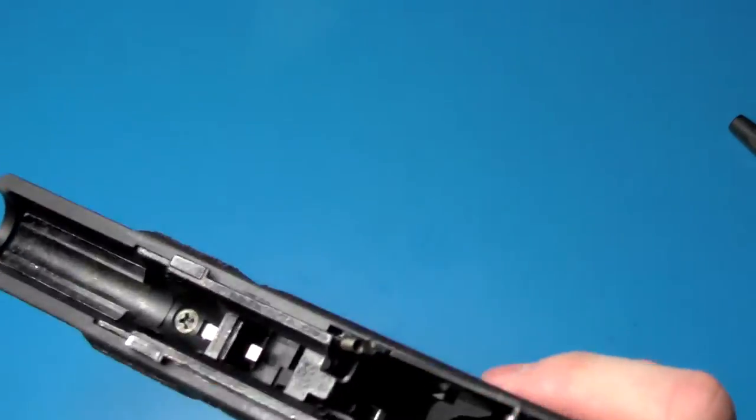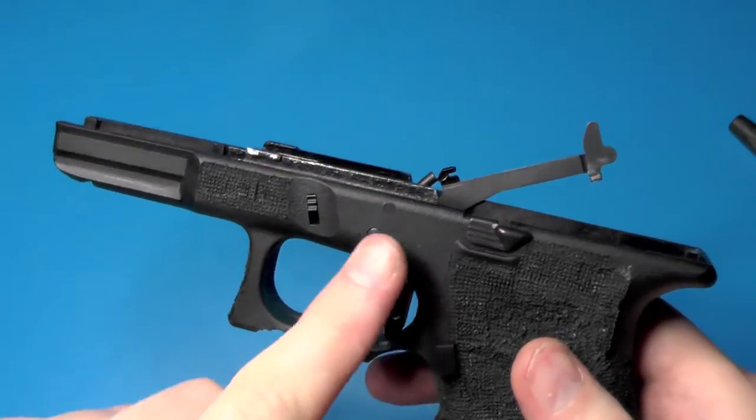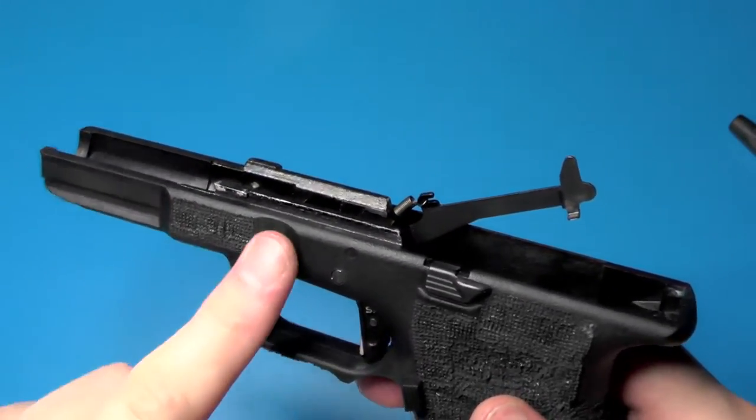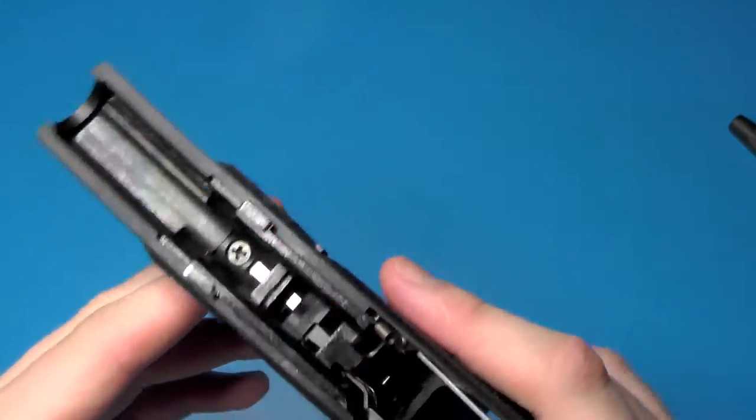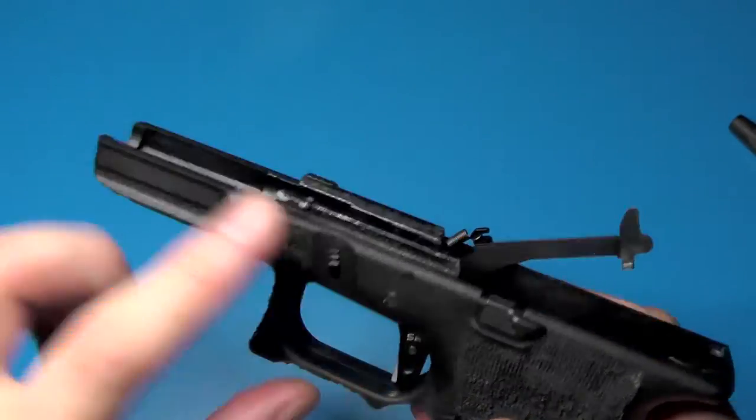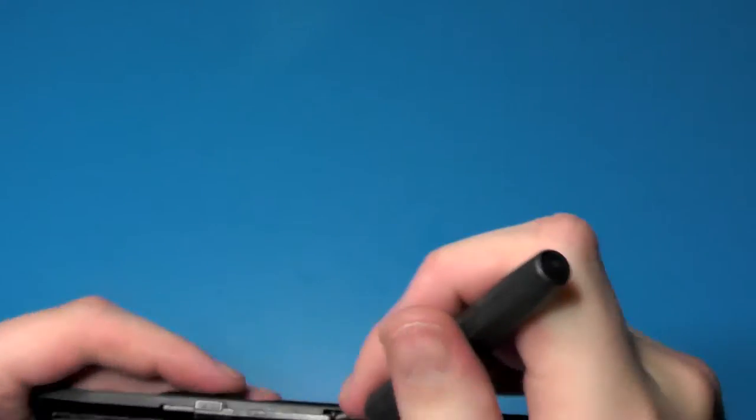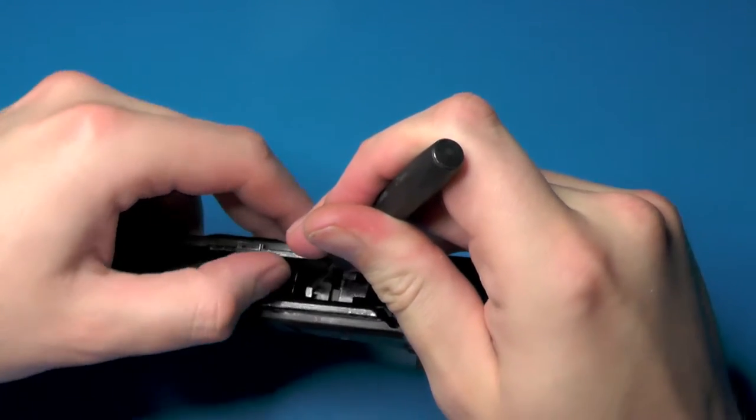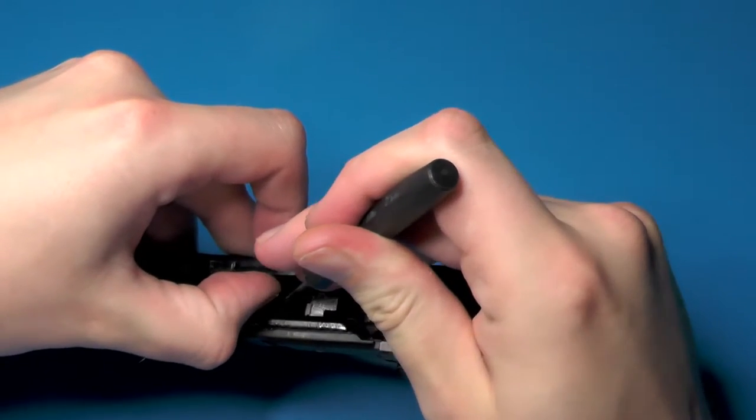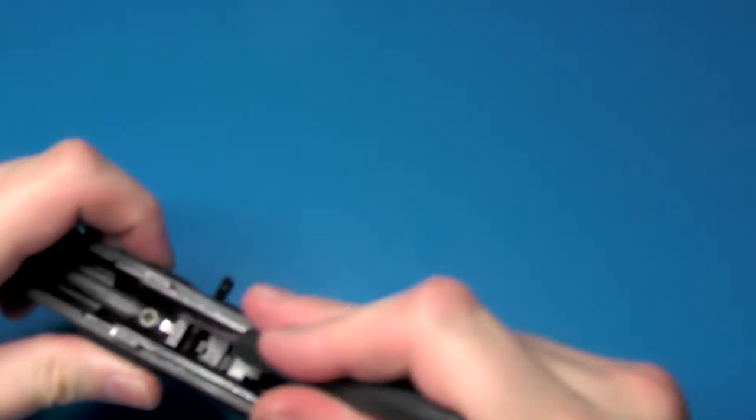And just to make sure you don't lose the spring, go ahead and take out the valve reset knocker and put this to the side. So unfortunately to get the trigger out, we're going to have to remove the inner frame as well, which pretty much strips the entire pistol. So we're going to remove the slide lock lever next. Take a punch, push down on the little spring in here and slide lock lever.